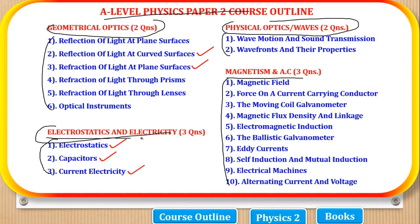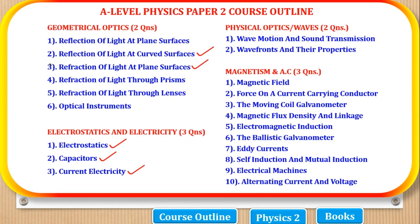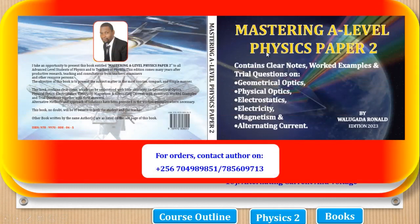The part of Electrostatics and Electricity was already completed, and now we are on Geometrical Optics. The first topic is not available because it doesn't involve calculations, so we began with the next one, and now we are on Refraction of Light at Plane Surfaces. I addressed it in the calculations but full notes are available in the book Mastering A Level Physics Paper 2.